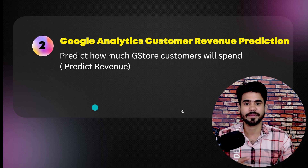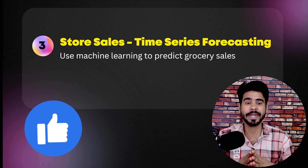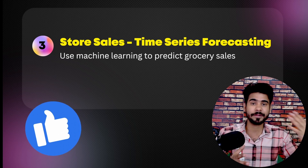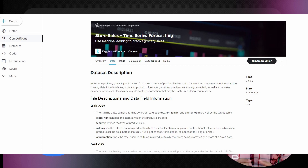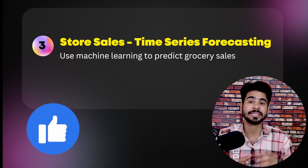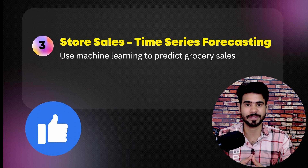The third project is Store Sales Time Series Forecasting, where you use machine learning to predict sales after three months, six months, or one year for a particular store. Again, this is a Kaggle competition project. In this competition you predict sales for thousands of product families sold at stores. The training data includes dates, store and product information, whether items were being promoted, and sales numbers. Additional files include supplementary information useful for building the model. At the end you can predict sales for the next six months, three months, or one year for a particular store.